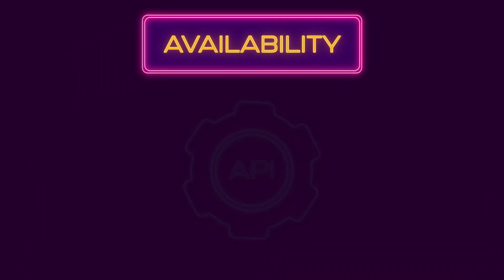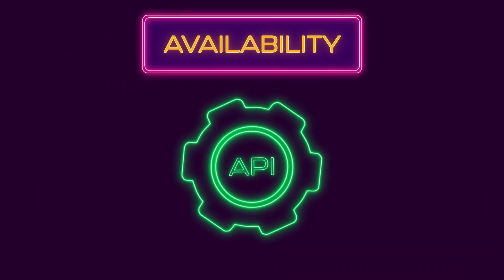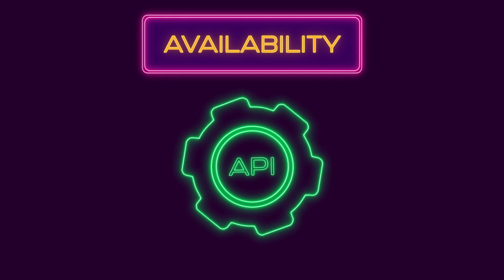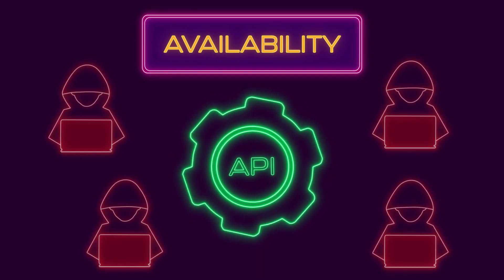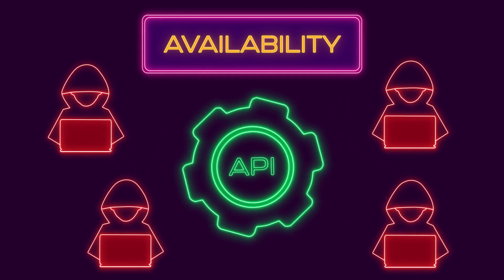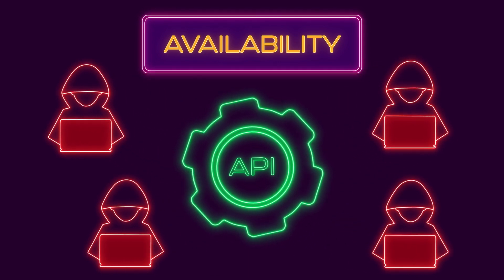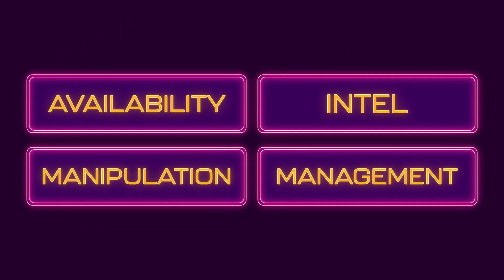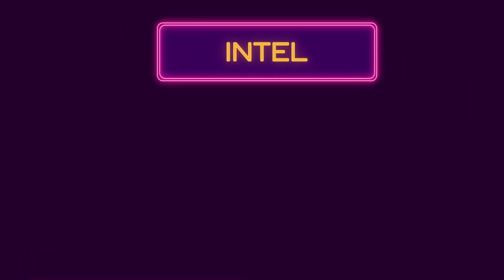Availability: ensuring that your APIs are up and running, capable of withstanding large volumetric attacks and high load, is critical to achieving high availability and keeping your users served.